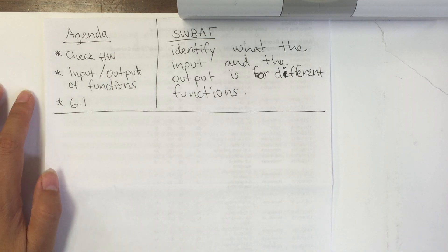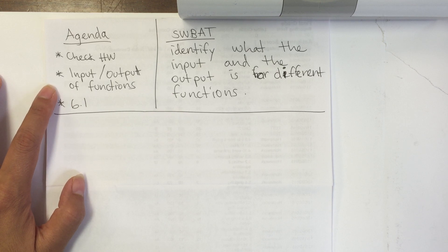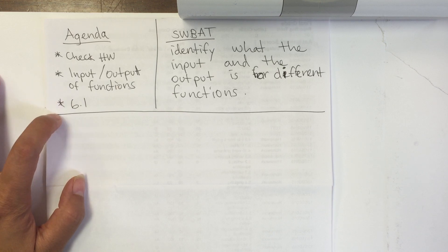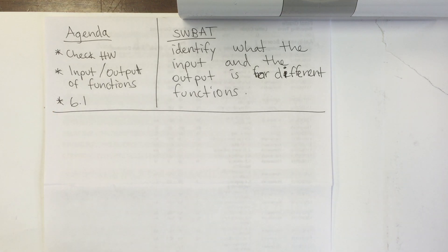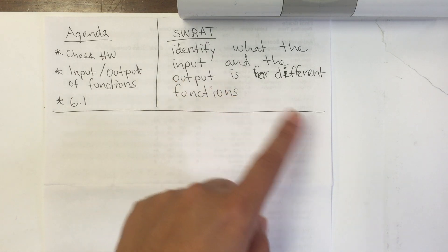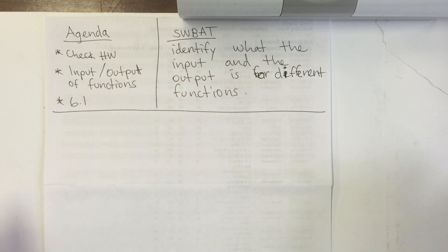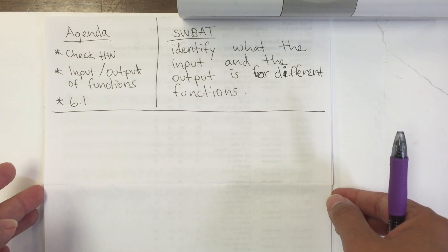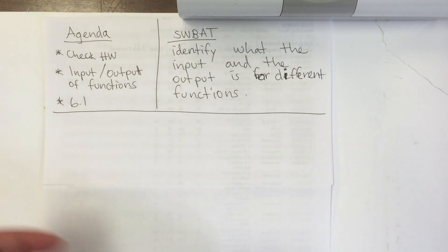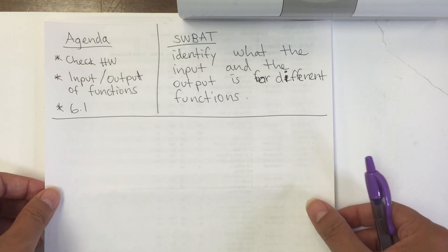Hello students! Today's agenda is to check your homework. We're going to be going over input and output of functions, and you will be able to do 6.1. Today's objective is: students will be able to identify what the input and the output is for different functions. We're not going to be doing anything more than just identifying them, and we're also going to be creating some scenarios for some functions.